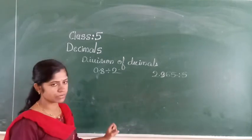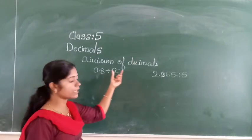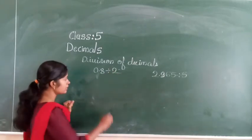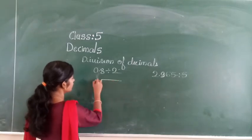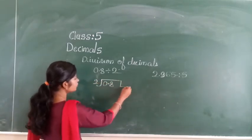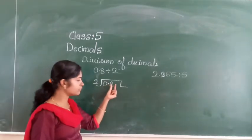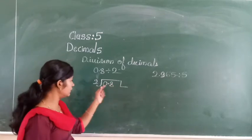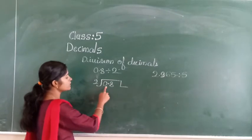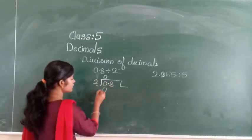See here the division of decimals. Here there is a whole number and a decimal number — this is a decimal number and this is a whole number. Then how to divide this number? First you have to write here 2 and write here 0.8. First you have to take this 0, after that you have to take this 8. In 2 on the table, 0 is not there, so take here: 2 zeros are 0.